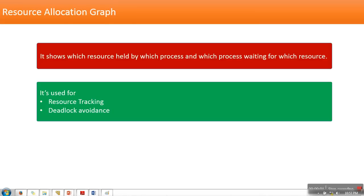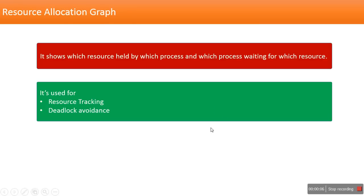In this video I'm going to explain resource allocation graph in operating systems. A resource allocation graph represents which resource is held by which process, and which process is waiting for which resource. We are going to see this concept in detail.